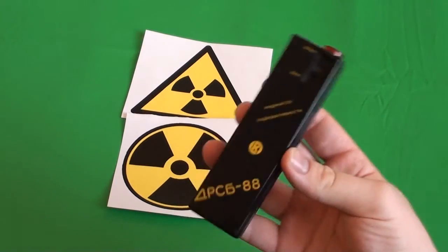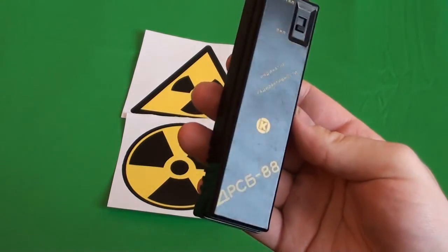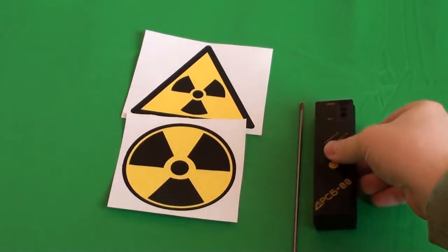Okay, so that's it, that's DRSB88, a really cheap radioactivity detector which you can buy on eBay. And that's about it. Bye!